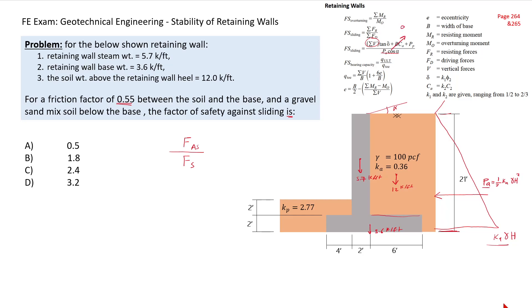Finally, we have Pp, the Rankine passive force. The stress distribution maximum is kp·γ multiplied by small h, which is the distance from the base to the top of the passive soil. Pp equals the area of the triangle multiplied by one linear foot, so Pp equals one-half·kp·γ·h multiplied again by h, multiplied by one foot.